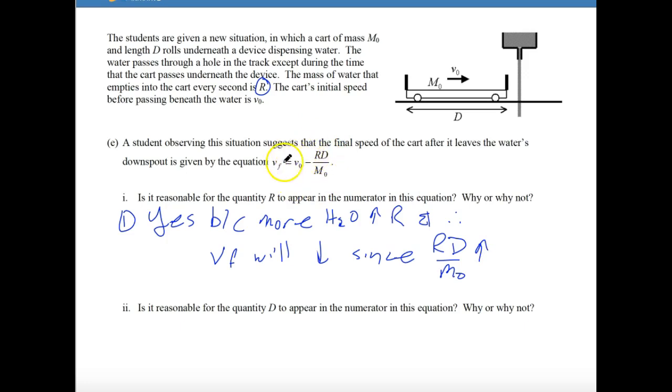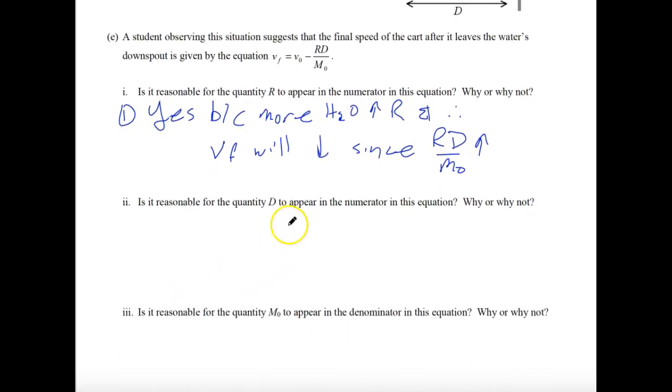Next one, is it reasonable that the quantity D to appear in the numerator? And remember, D is the distance. And this one, again, is absolutely yes. And it's because if I increase, if I have D there, the longer D is, the more water I get. And it's basically the same thing as we had here. And we can say because more water will go in as you have D, and therefore VF will decrease since the RD over M0 will increase. So we're not saying D is getting bigger the distance itself. It's just that you're going to get more water in because of that.